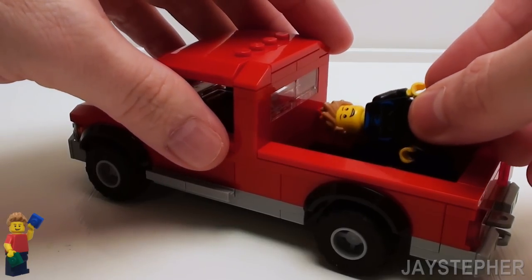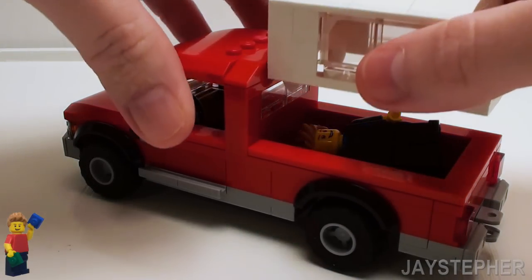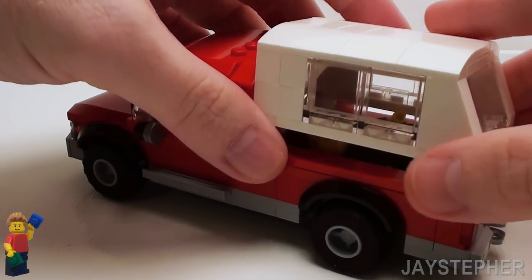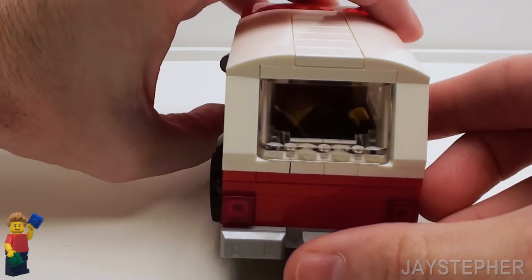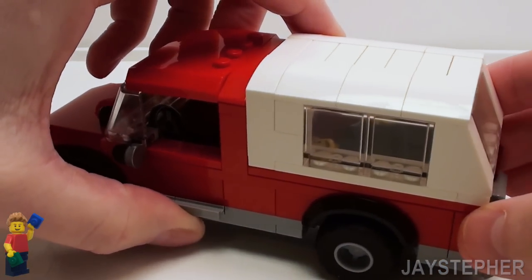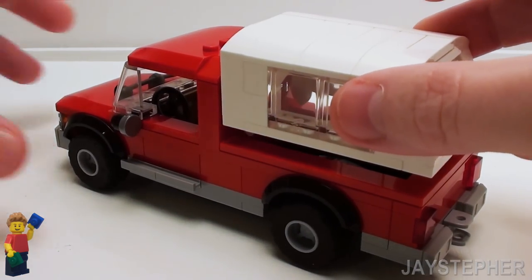We can even set Jay the surfer inside so he can take a very uncomfortable nap. Even use this as a small camper too so you can barely see him inside. It is a nice addition for this little pickup.